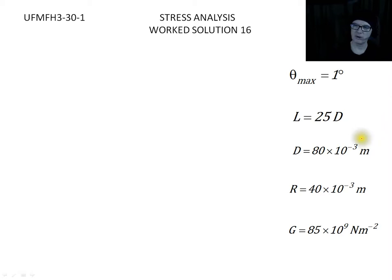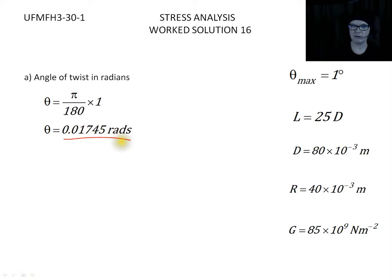I've got the modulus of rigidity, 85 gigapascals. The first part is to find the angle in radians. To convert degrees into radians, simply divide by 180 and times by pi. So we'll take our one degree, divide by 180 degrees, and times it by pi, which gives me this amount of radians that the shaft is twisted.